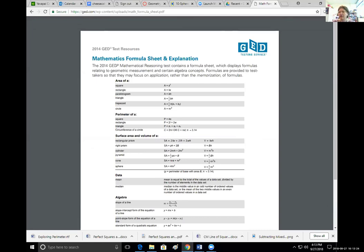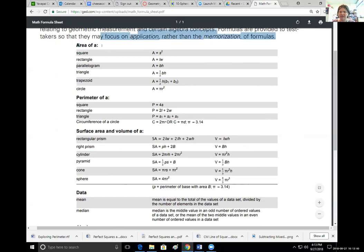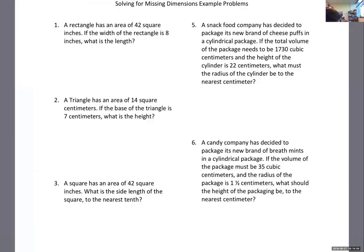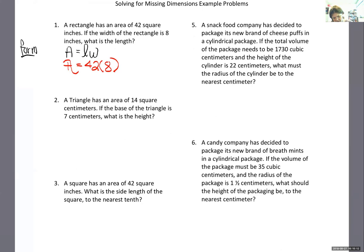We copy the area of a rectangle formula right from the formula sheet: A equals LW — area equals length times width. We write the formula first, then do substitution. Students sometimes go straight to 'A equals 42 times 8,' and that makes me scream. You don't just automatically plug in numbers because you like the right-hand side of the equation.